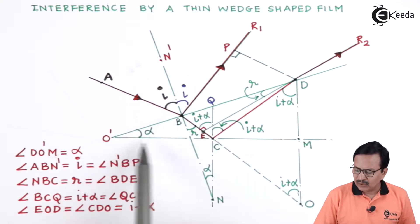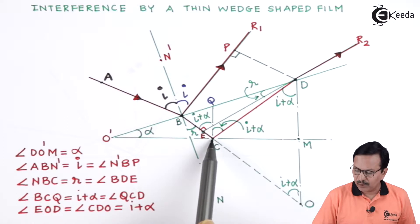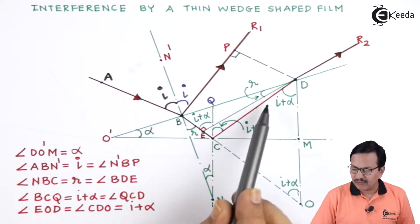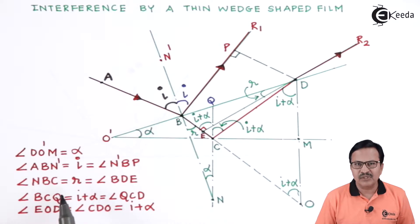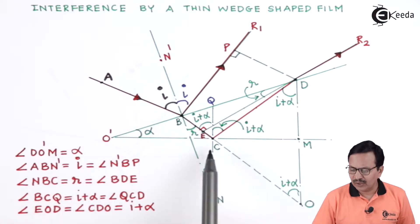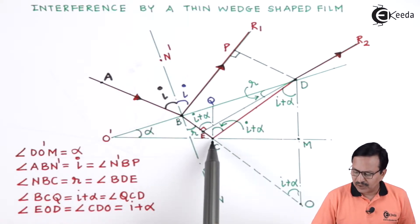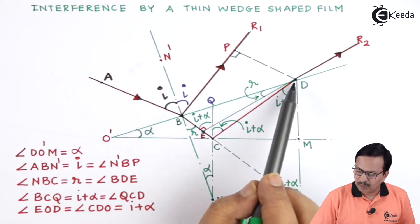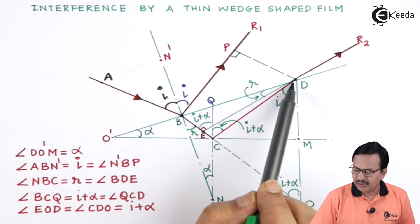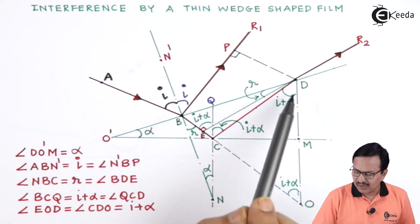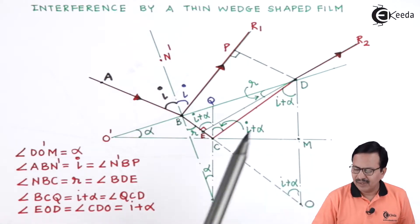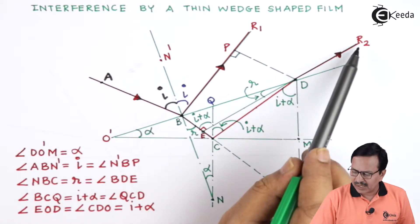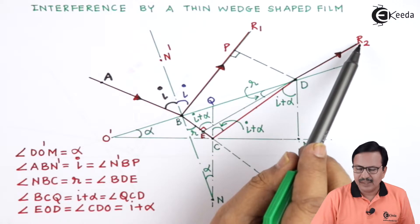This ray will hit the lower plate of the wedge at point C, where we have reflection. We assume the assembly is placed on a surface that does not allow transmission. The wave reflects from point C and meets the top plate at point D. At D there is transmission as well as reflection, but we focus only on the transmitted wave, which is DR2.